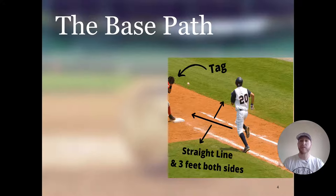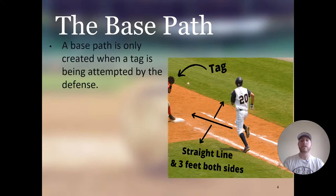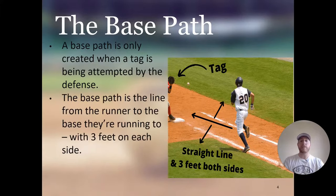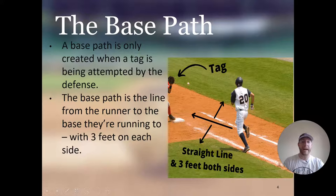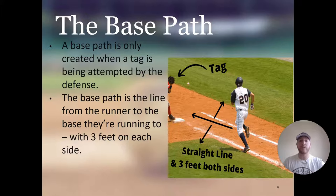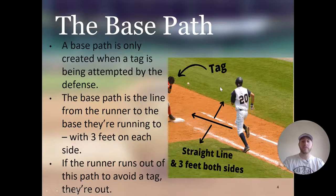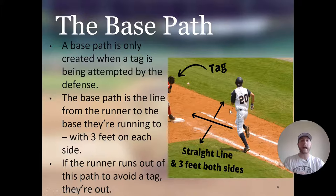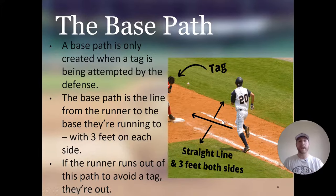There's something called a base path, and this is different than the baseline. A base path is only created when a tag is being attempted by the defense. The base path is the line from the runner to the base they're running to, with three feet on each side. If the runner tries to avoid the tag by running outside of that three-foot area, they would be called out. The white chalk line is the baseline — that never changes. The base path is created only when there's a tag play, from a straight line from the runner to the base with three feet on each side.